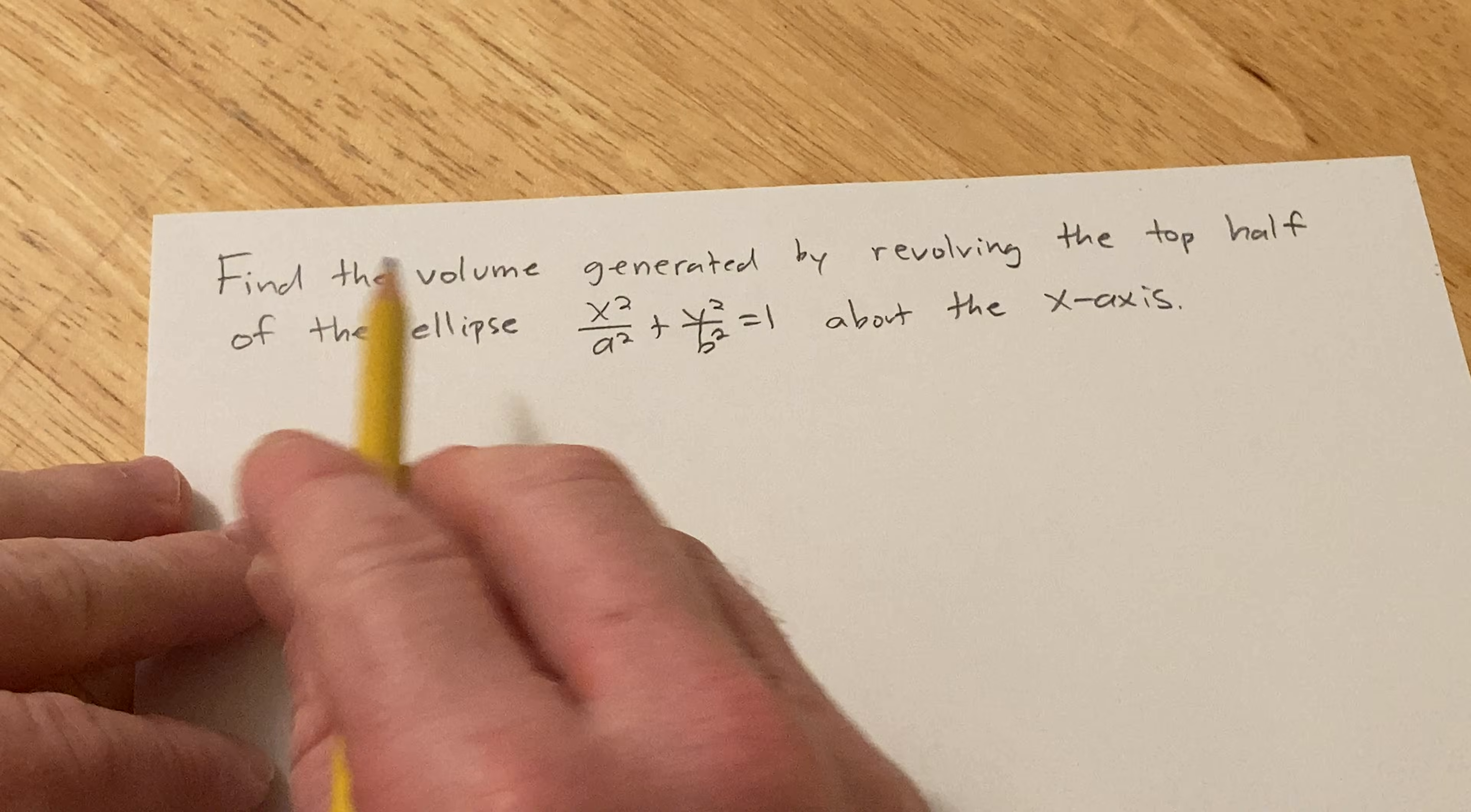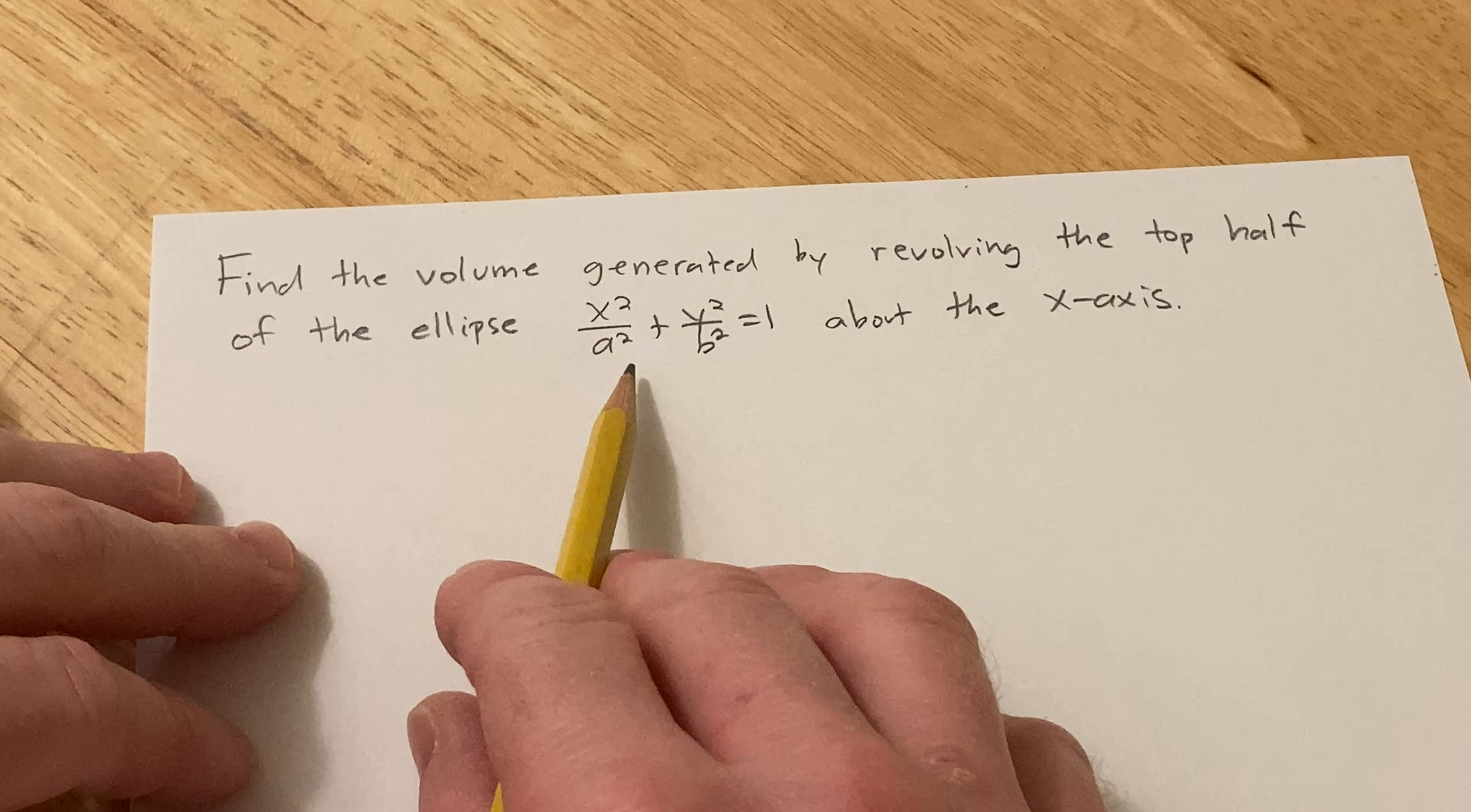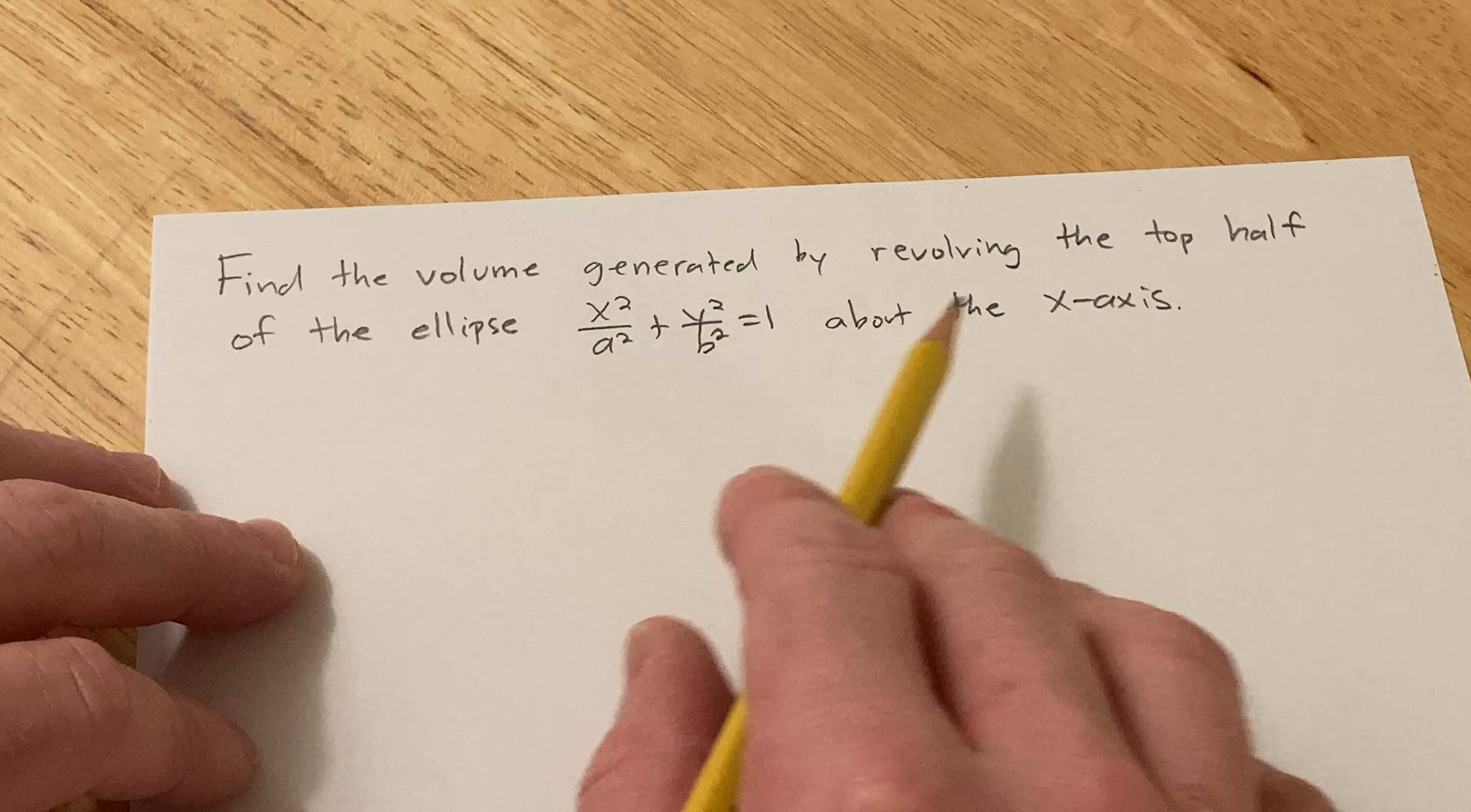Hi, in this problem we're going to find the volume generated by revolving the top half of this ellipse, x squared over a squared plus y squared over b squared equals 1, about the x-axis.